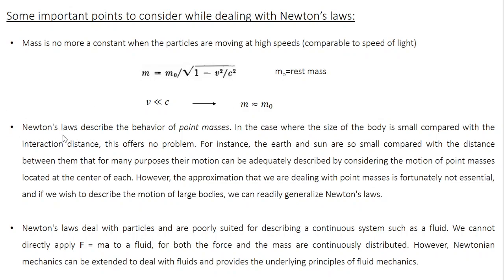The second point: Newton's laws describe the behavior of point masses and can be applied only to point masses. In the case where the size of the body is small compared with the interaction distance, this works fine. We know Newton's laws can be used to understand planetary motion — for example, the rotation of Earth around the Sun. Clearly Earth and Sun are not point masses, but compared to the distance between them, their size looks very small.